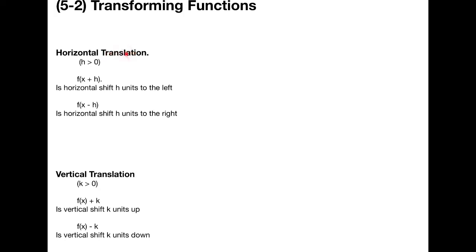Translation is just taking an object — a figure, a plane figure — and moving it around in the coordinate plane. That's just a rigid movement of your object. Here we have two types of translations: the first one is horizontal and the second one is vertical. So let's review them.